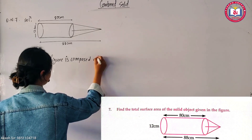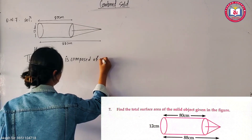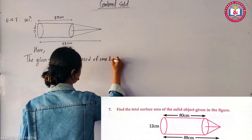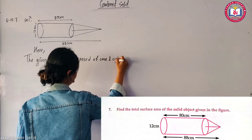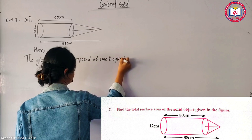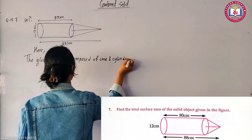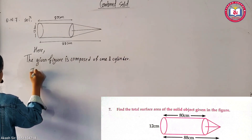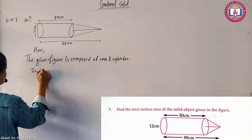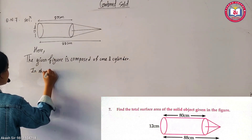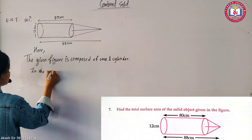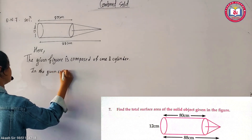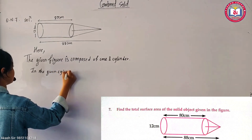The given figure is composed of a cone and a cylinder.